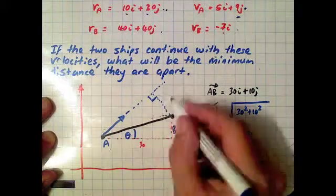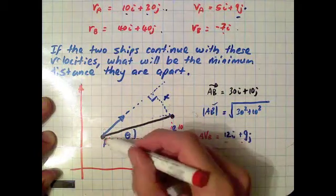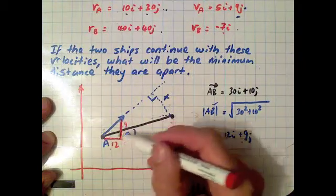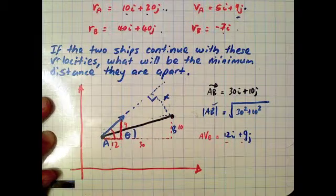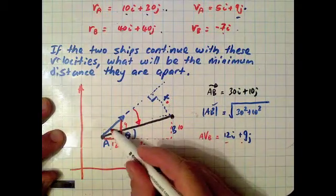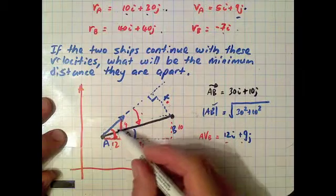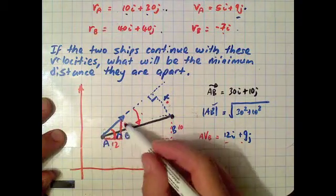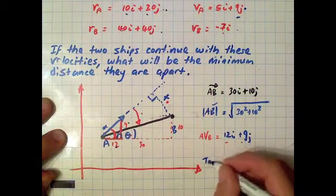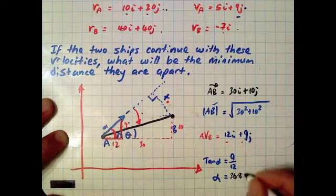There's the perpendicular line from B, and we want to find x - the distance away from B at closest approach. We can use trig on the velocity vector right angle triangle with sides 12 and 9. We want the angle alpha: tan of alpha equals 9 over 12 (O over A), so alpha equals tan inverse of 9 over 12, which equals 36.86 degrees. We also find angle theta: tan of theta equals 10 over 30, so theta equals tan inverse of 10 over 30, giving 18.43 degrees.